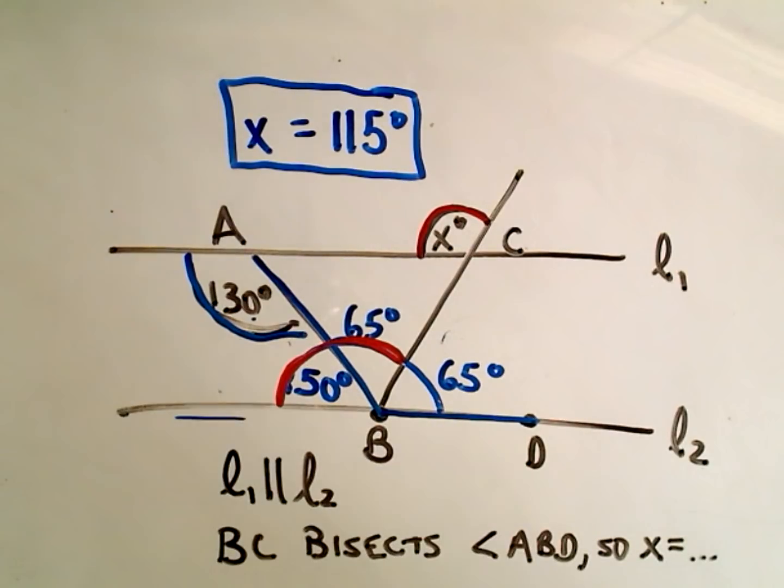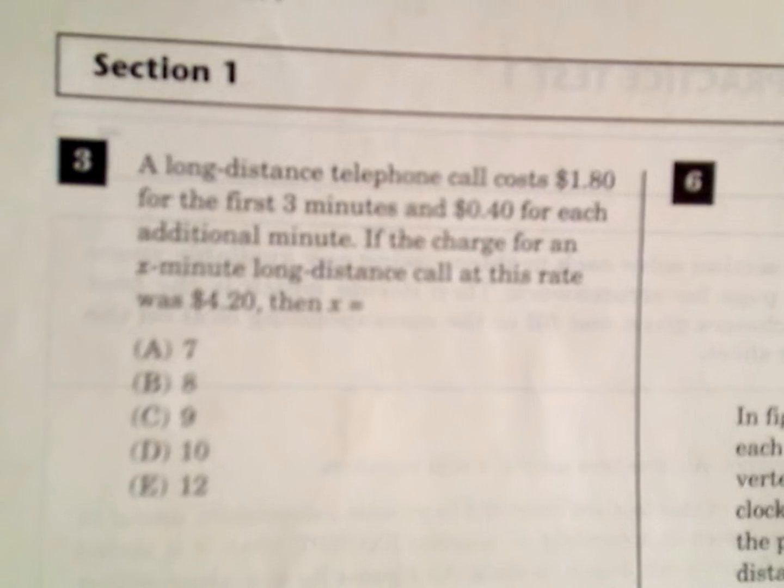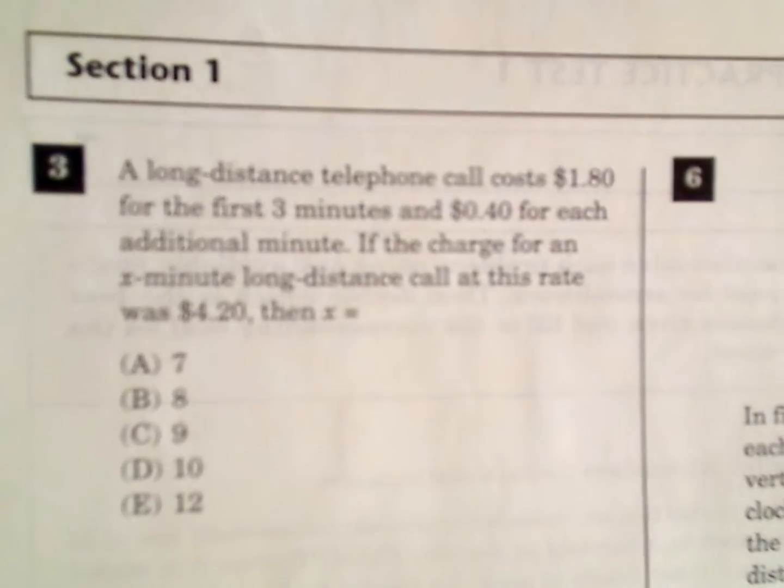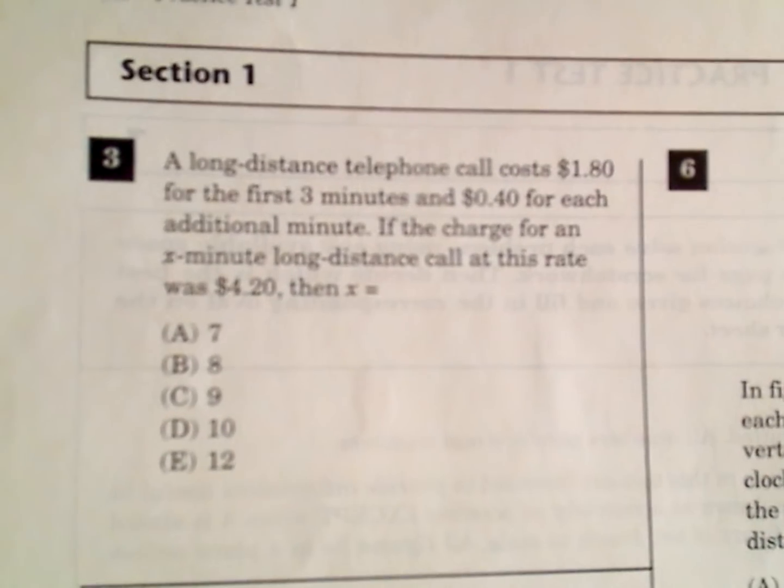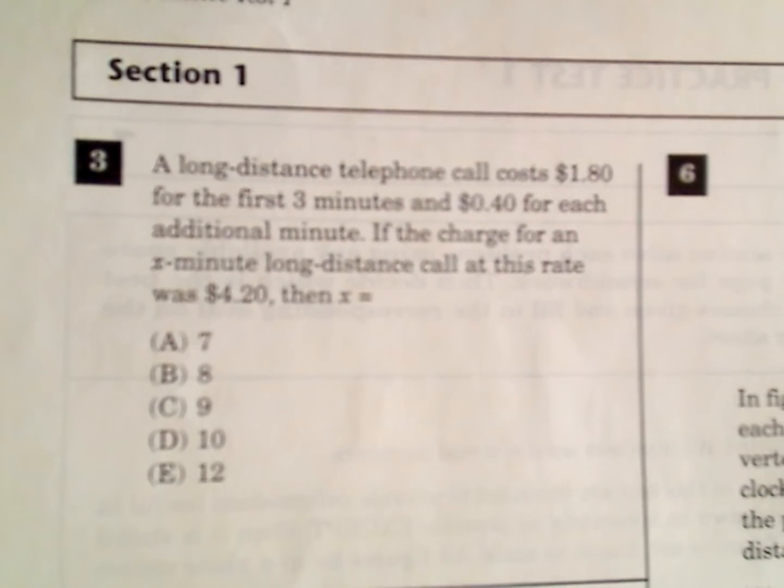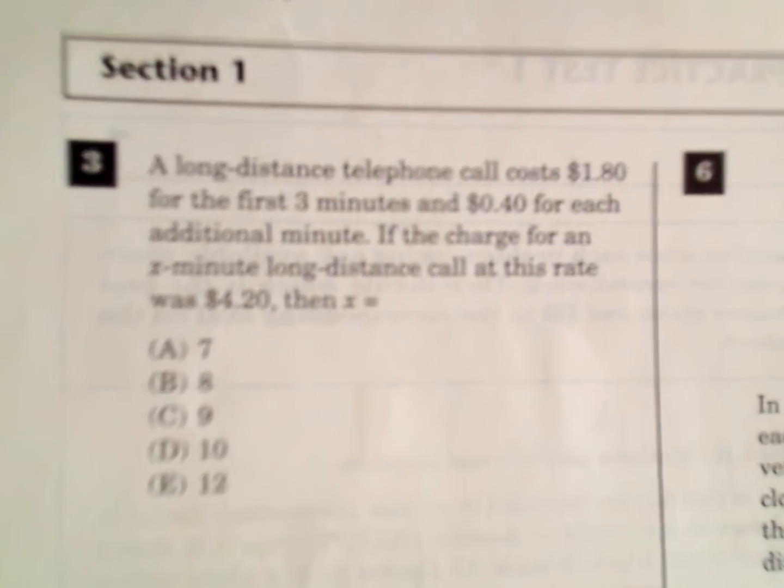Okay, let's try another problem here. And there's a lot of these problems, there's multiple ways you can do them for sure. So you may have an easier way, a better way. I certainly don't claim to have the only way. And, you know, you could say what way is the best, but that's going to be a matter of personal preference. So, okay, in this problem it says a long distance telephone call costs $1.80 for the first three minutes and 40 cents for each additional minute. If the charge for an X minute long distance call at this rate was $4.20, then X equals.